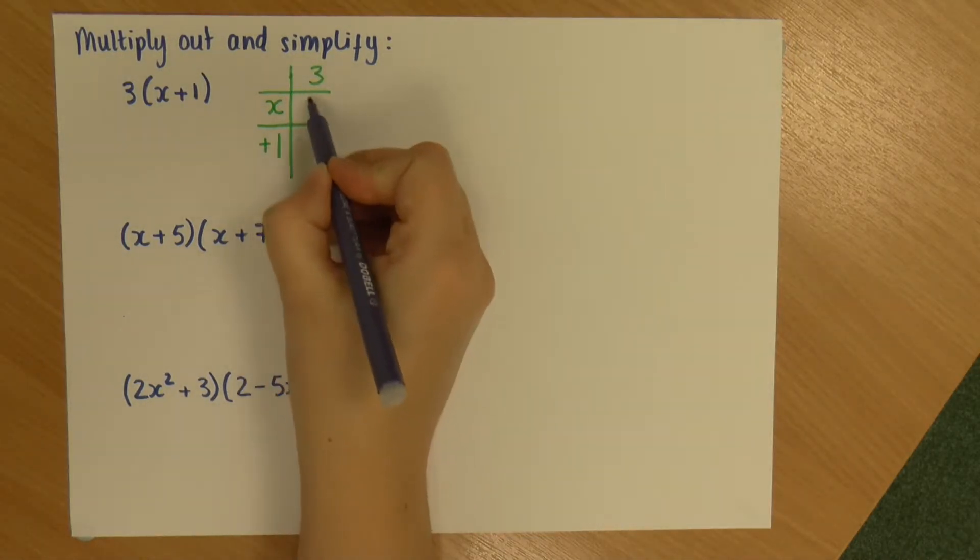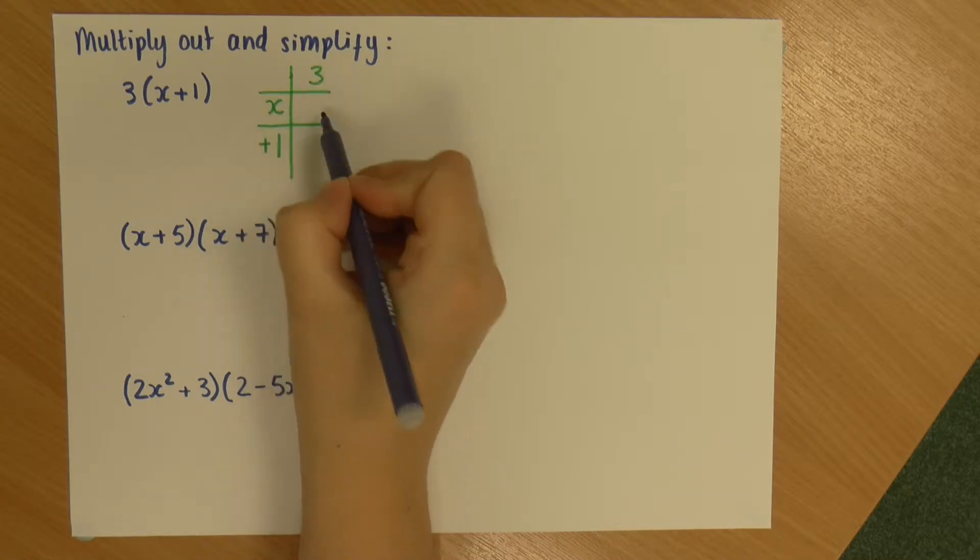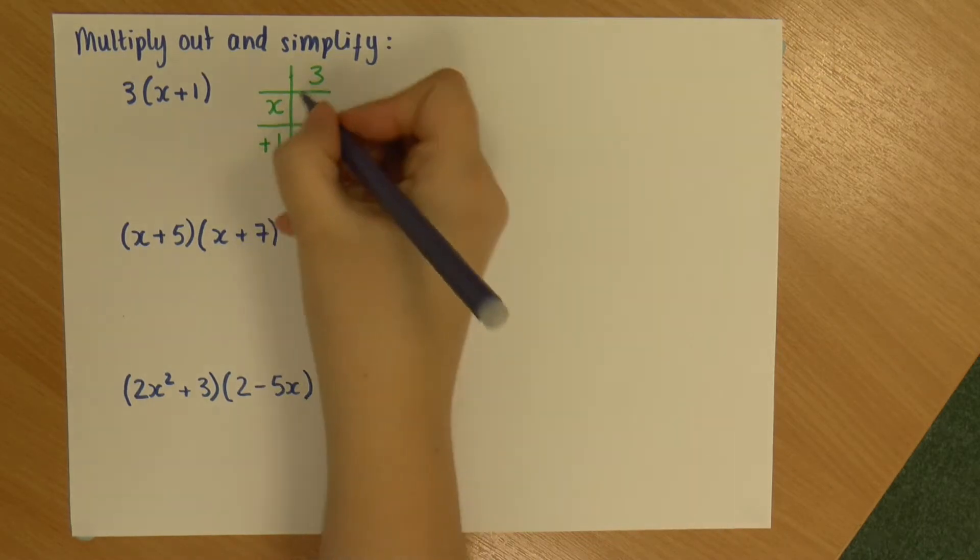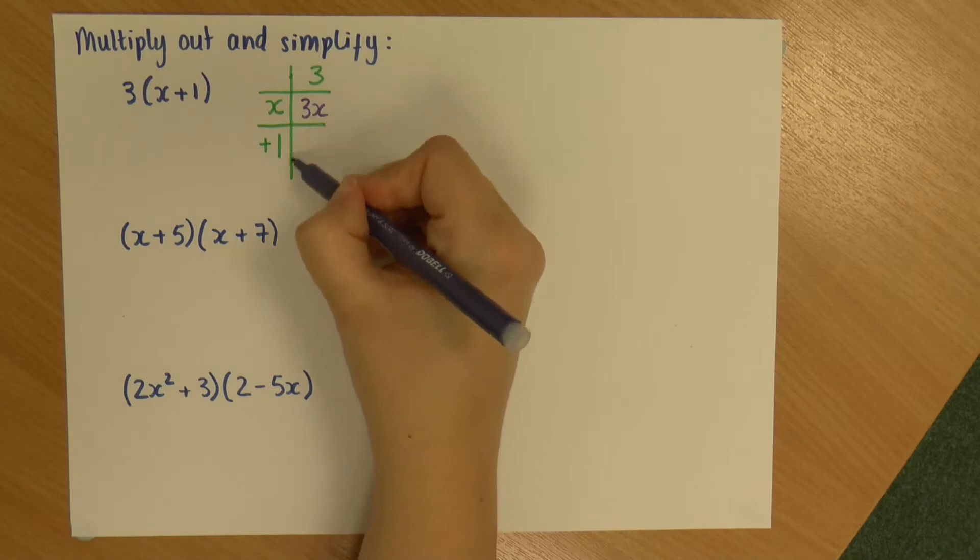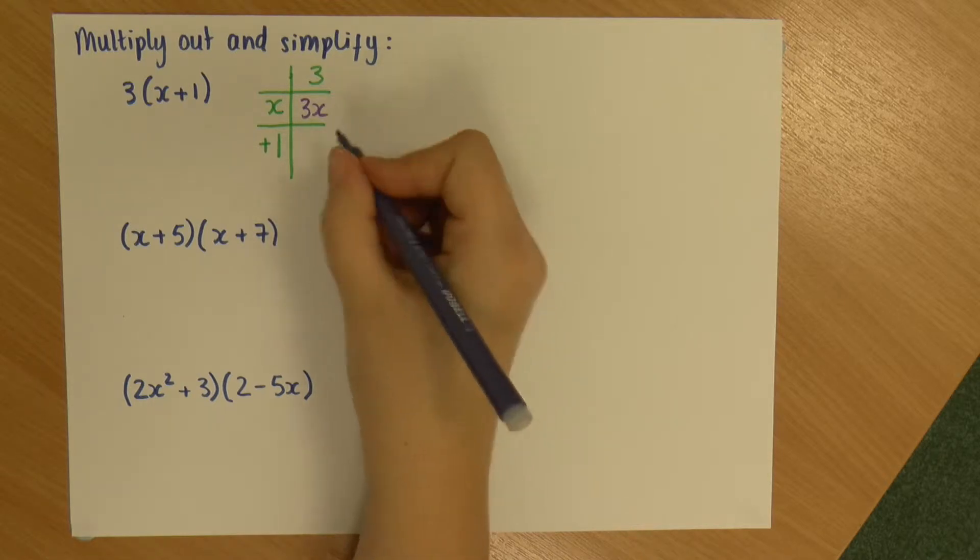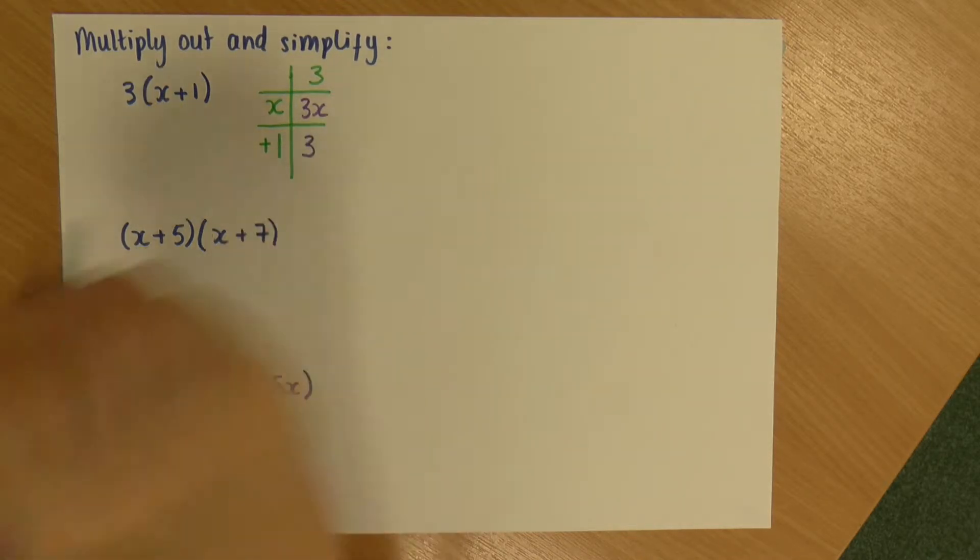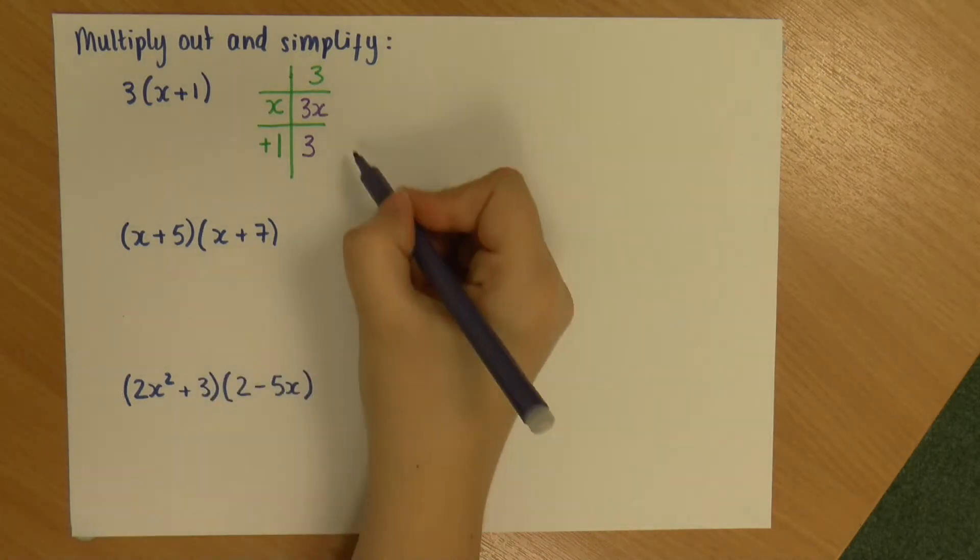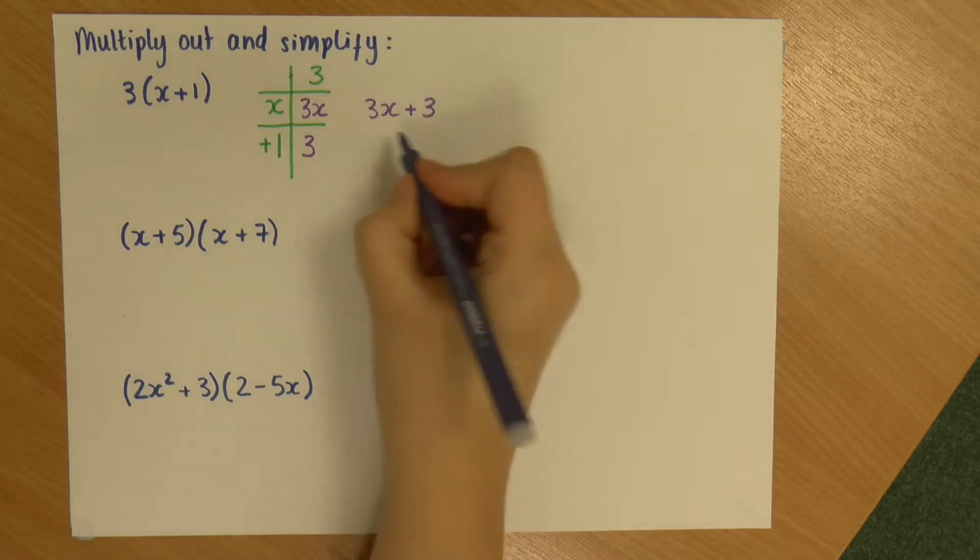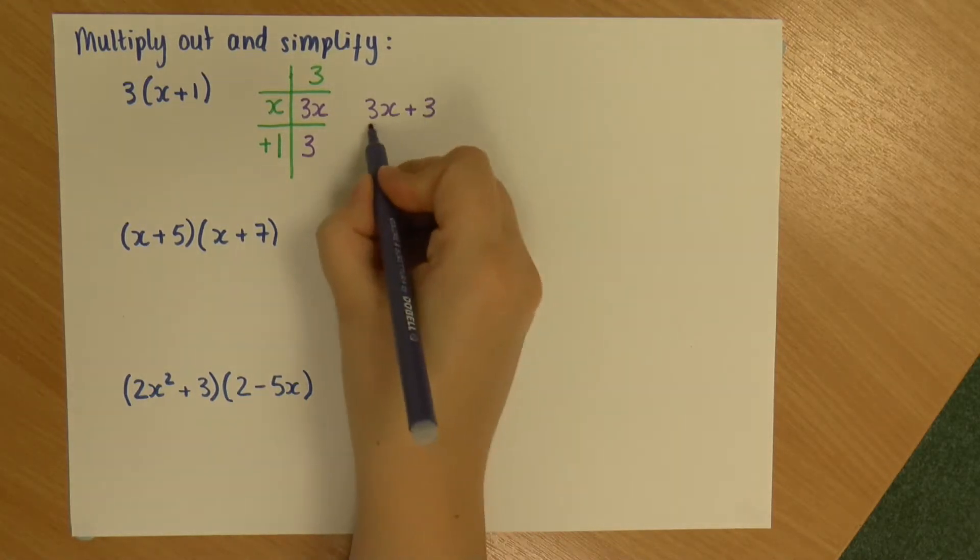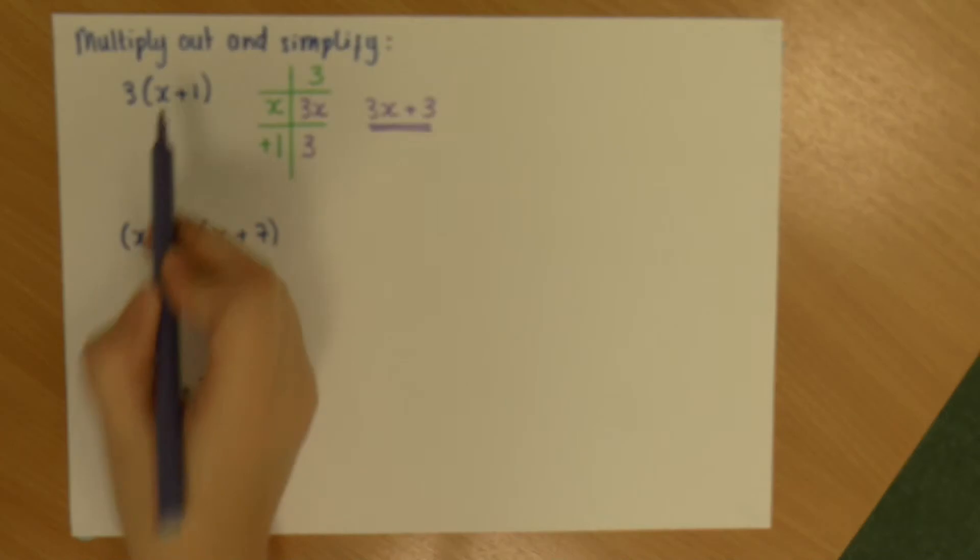I've drawn some boxes. And what happens in these boxes is me multiplying together the two things that are above and next to each box. So, for example, in this first box here, I have 3 times x. So, 3 times x is 3x. And in my bottom box, I've got 3 times positive 1 plus 1, which is just 3 times 1. So, 3 times 1 is 3. And I then just add these together to give me 3x plus 3. And that is this multiplied out.